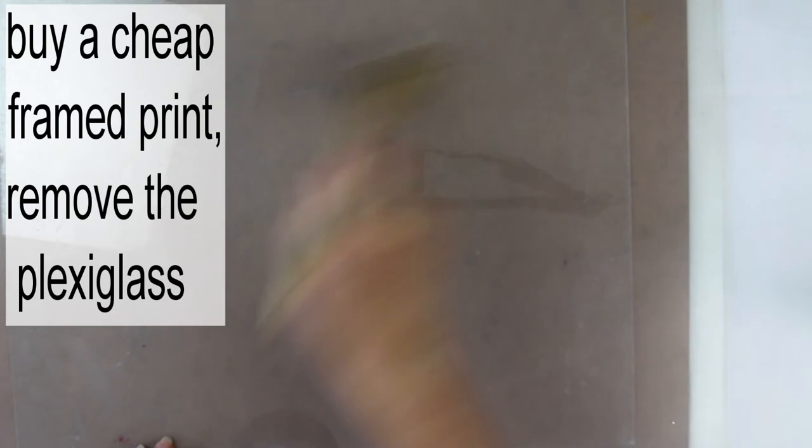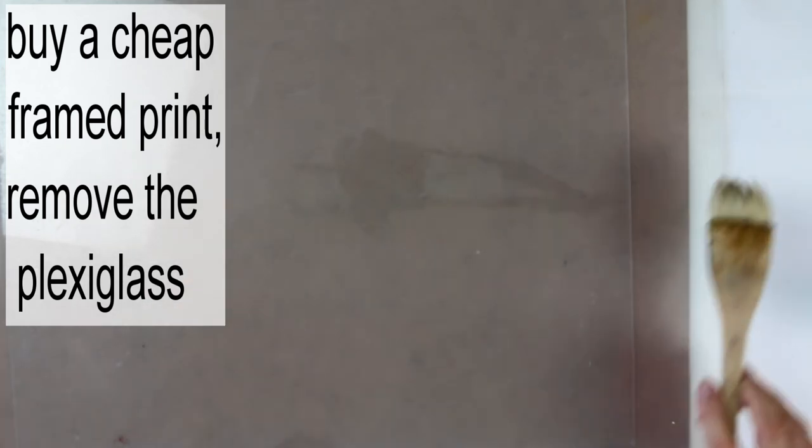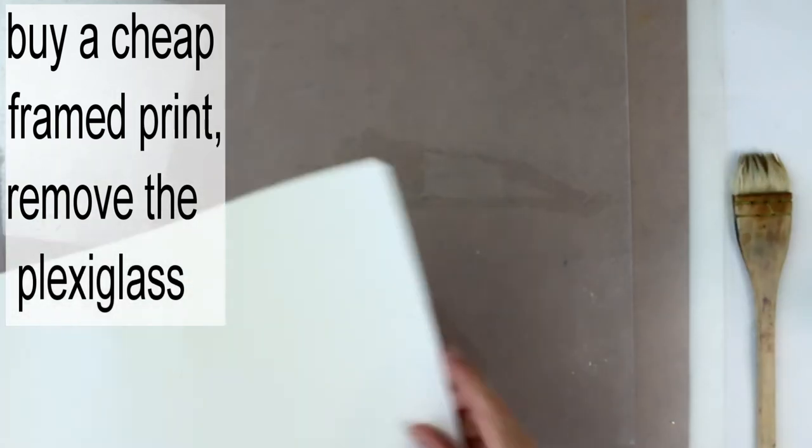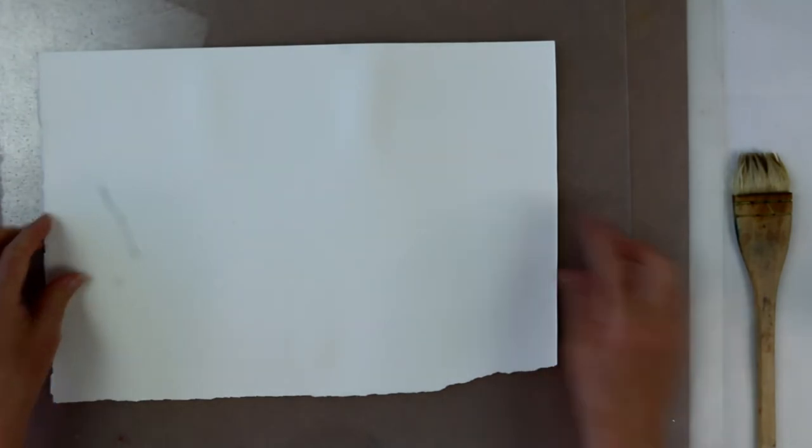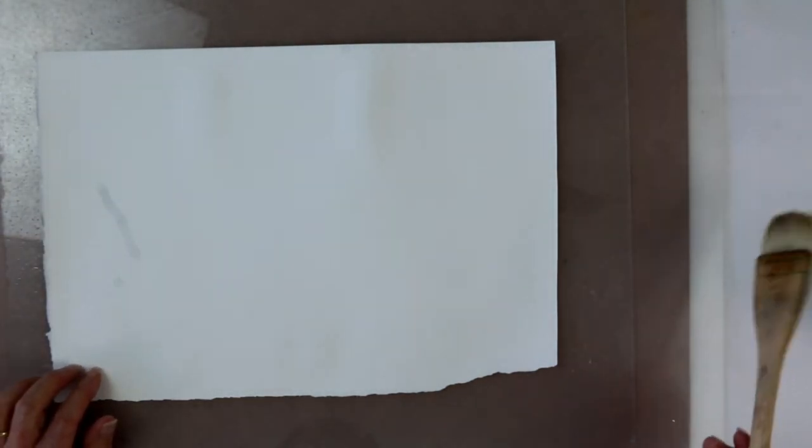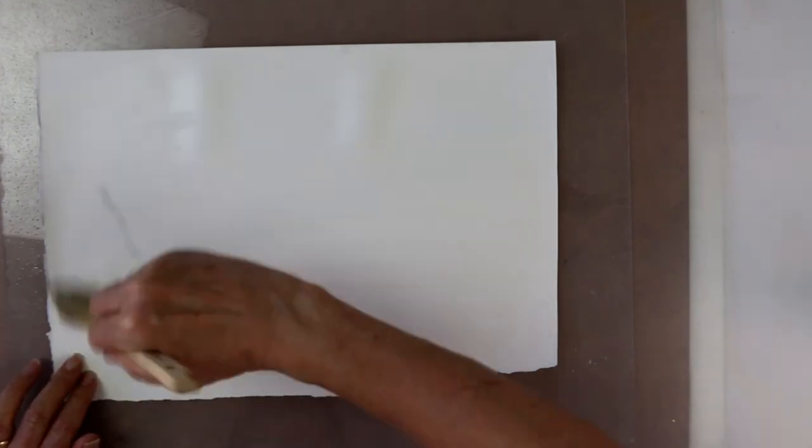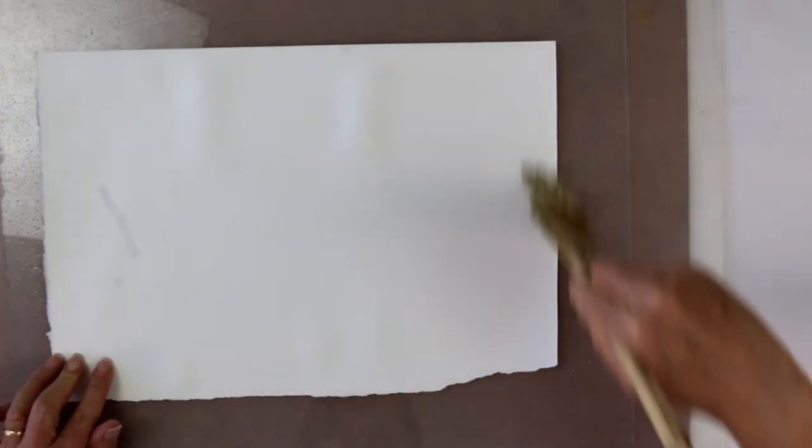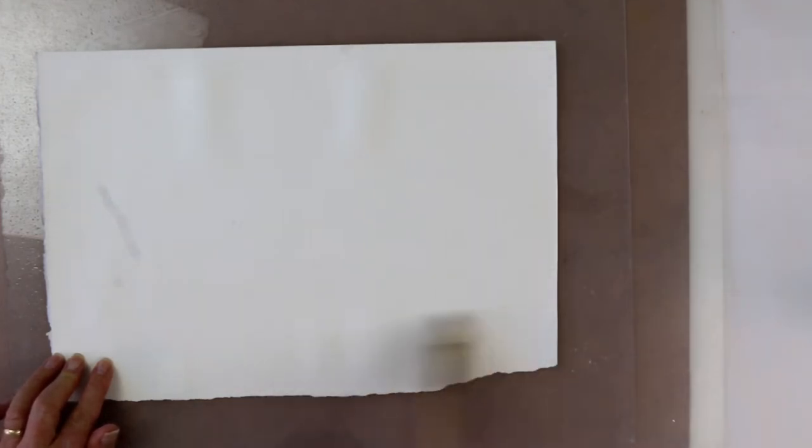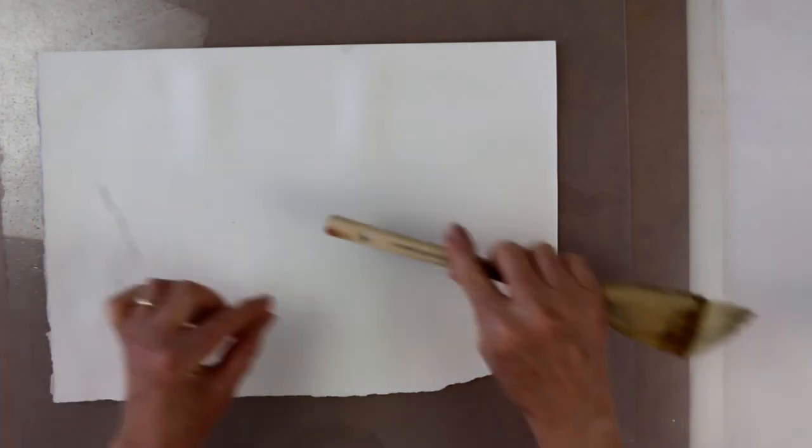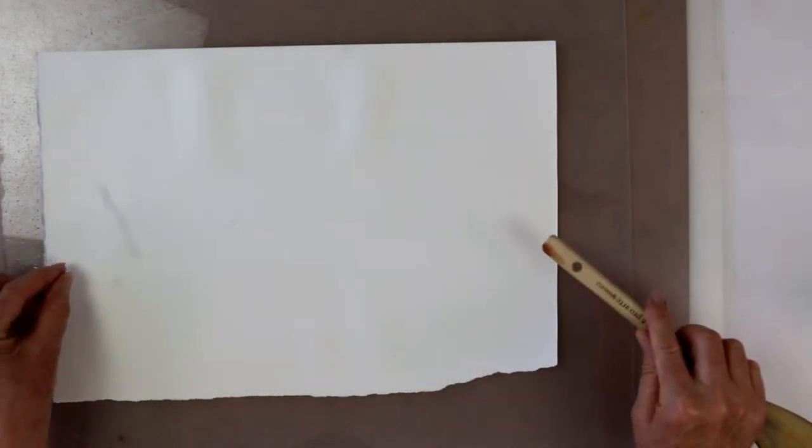So make it lovely and wet and then I take my watercolour paper and I put it straight down onto the wet surface and then I can take some more water and I can wet my paper all over and that will stay stuck to the plexiglass all the time that I'm painting.